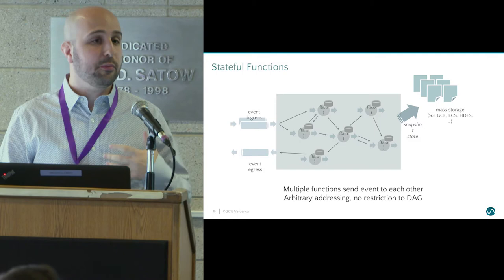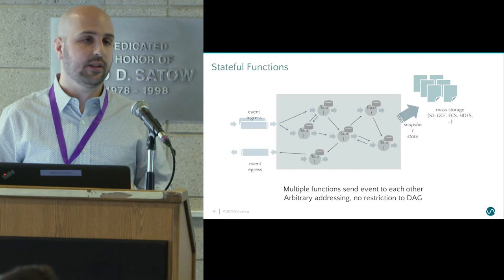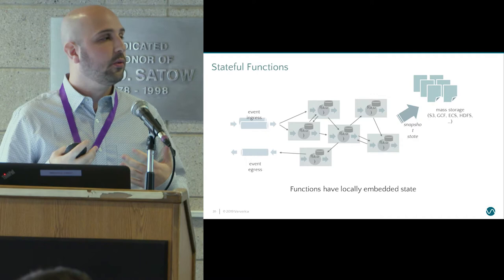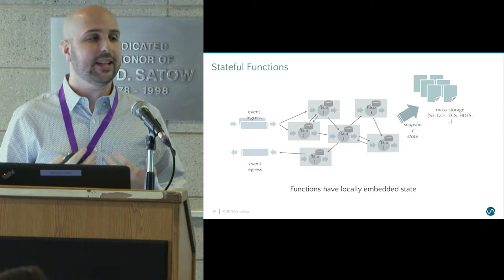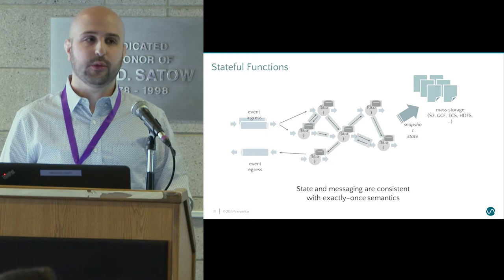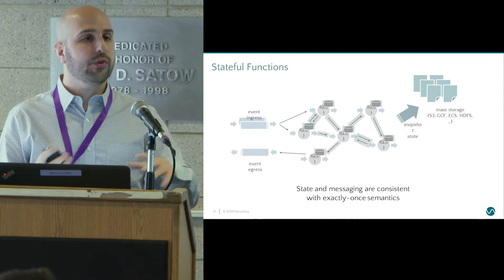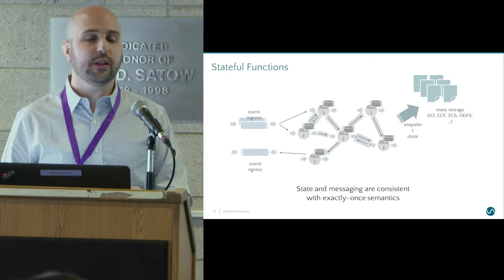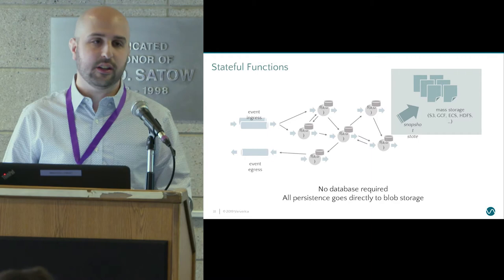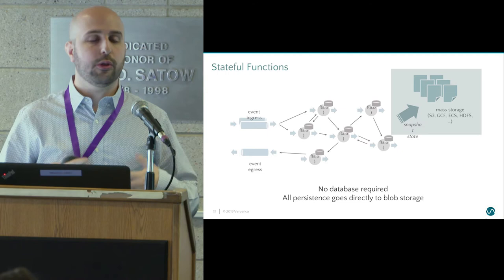If you're familiar with actor programming, this does share some similarities; however, there are a few very significant differences. The first is that all functions have locally embedded state. This is the thing that Apache Flink does really well — you are always, when inside a function performing some computation, working with local state in local variables. No network. The next is that for both state and messaging, we are still able to provide exactly-once guarantees. In the case of failure, we can roll the whole state of the world — both state and messages — back in a consistent manner, simulating completely failure-free execution. And the whole thing is no database required. You're really, truly working with local state that is thread-local, and we're managing fault tolerance through Flink's proven distributed asynchronous snapshots.